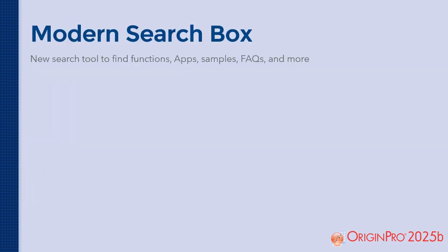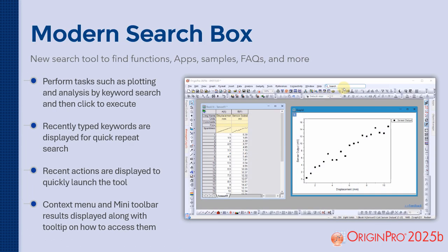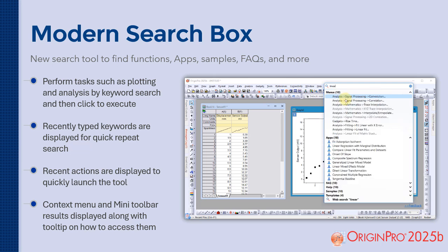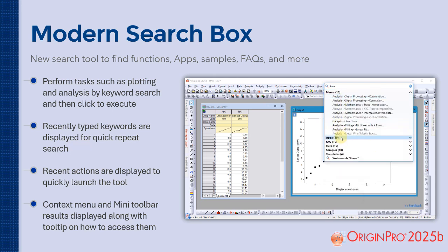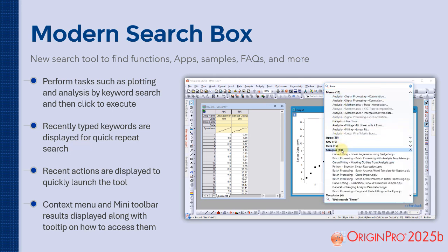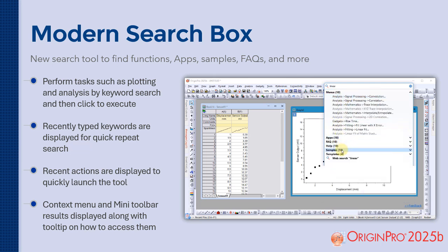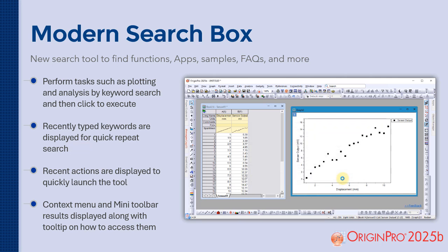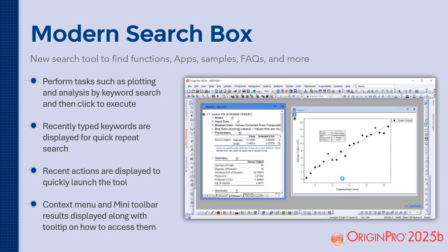The new modern search box lets you find and launch tools like plotting or analysis with just a keyword. It shows you your recent keywords and actions for quick access, and includes context menu and many toolbar options with tool tips to guide you.